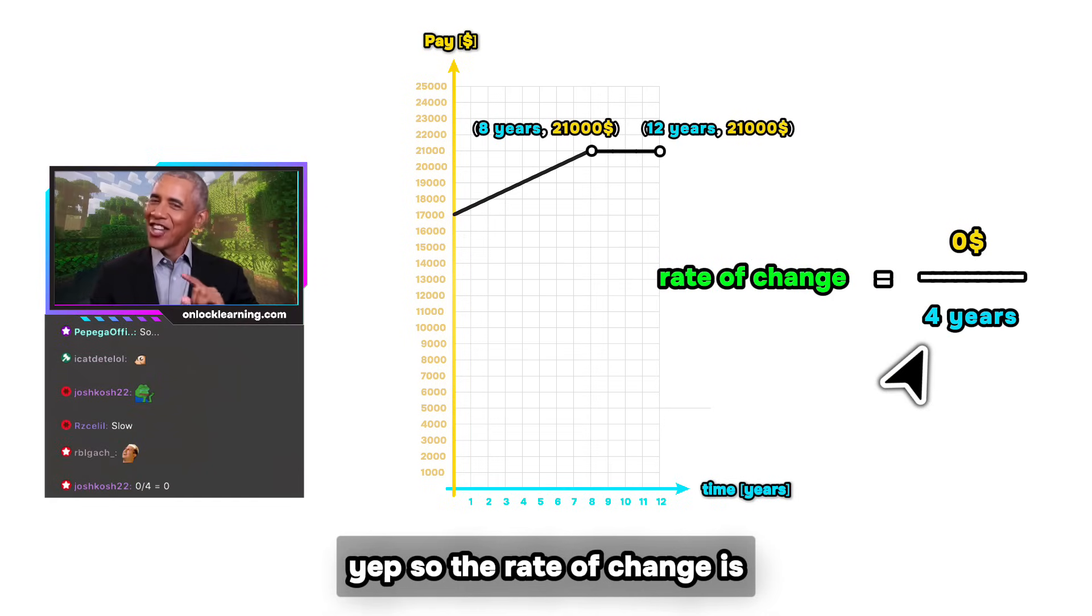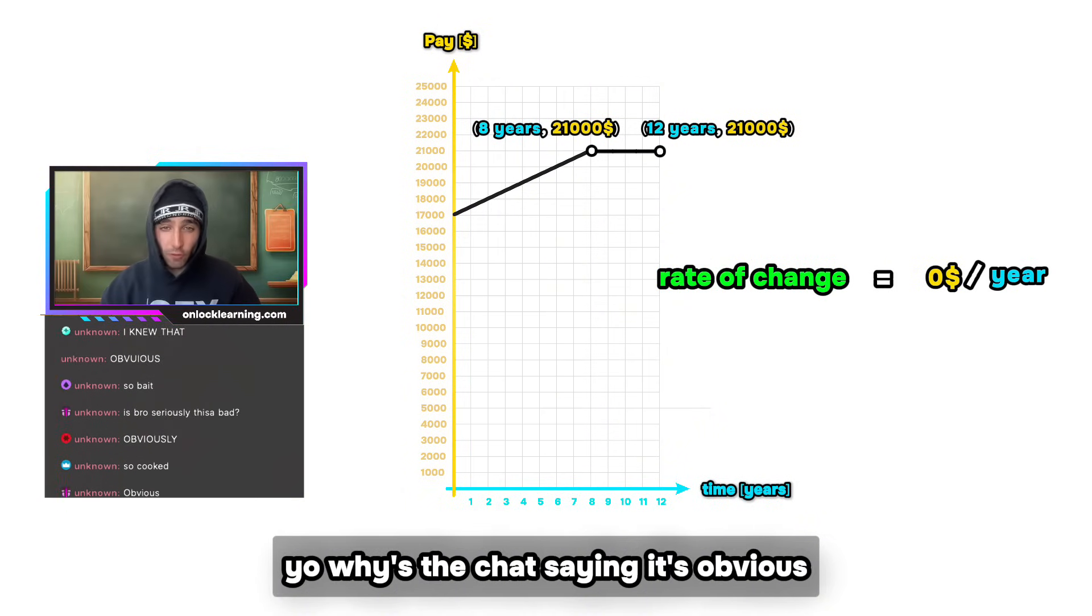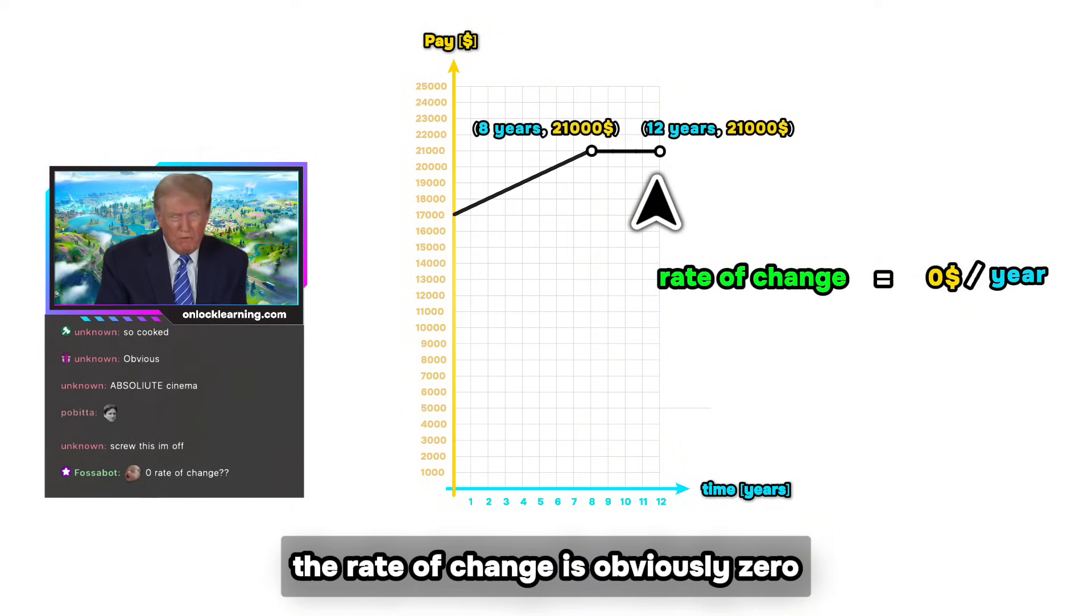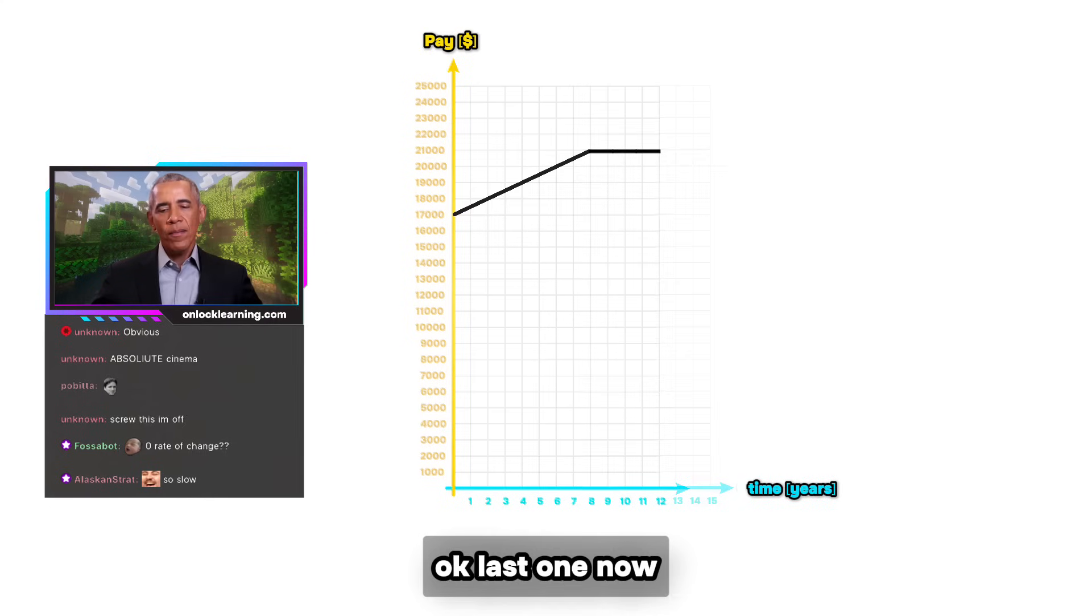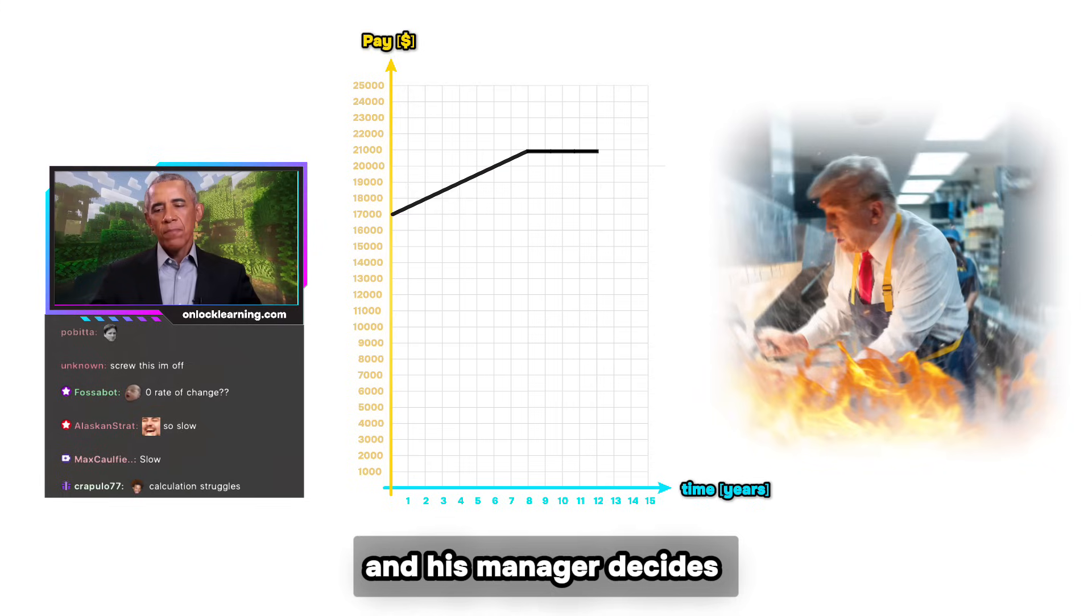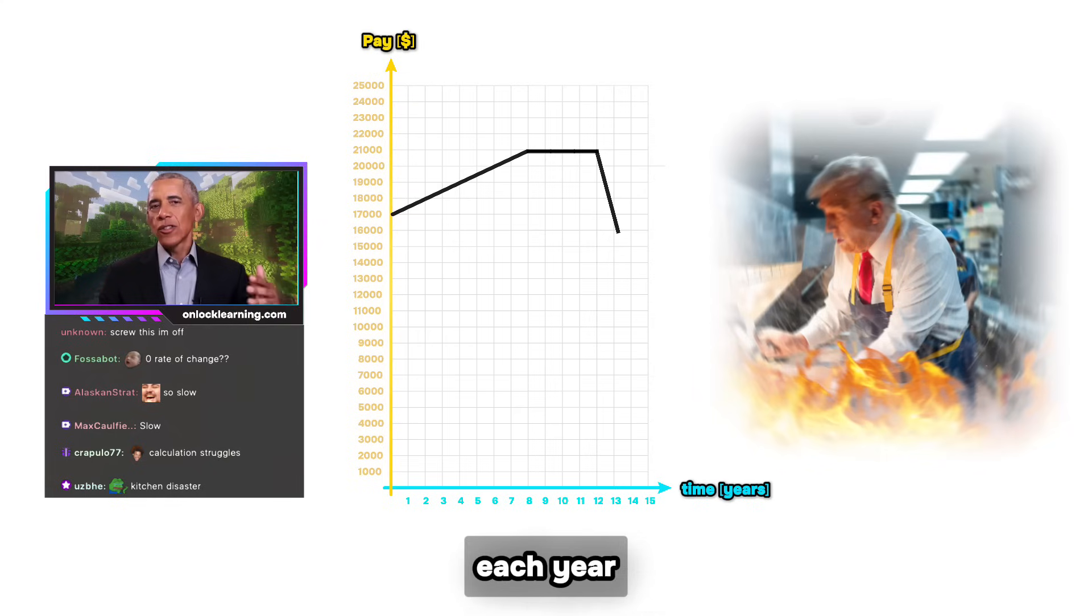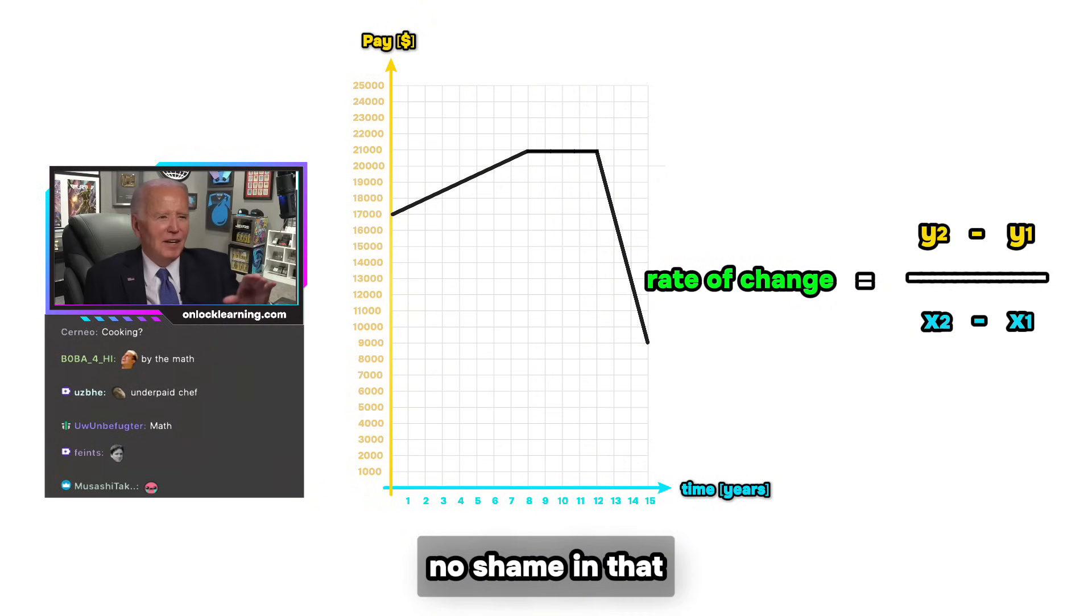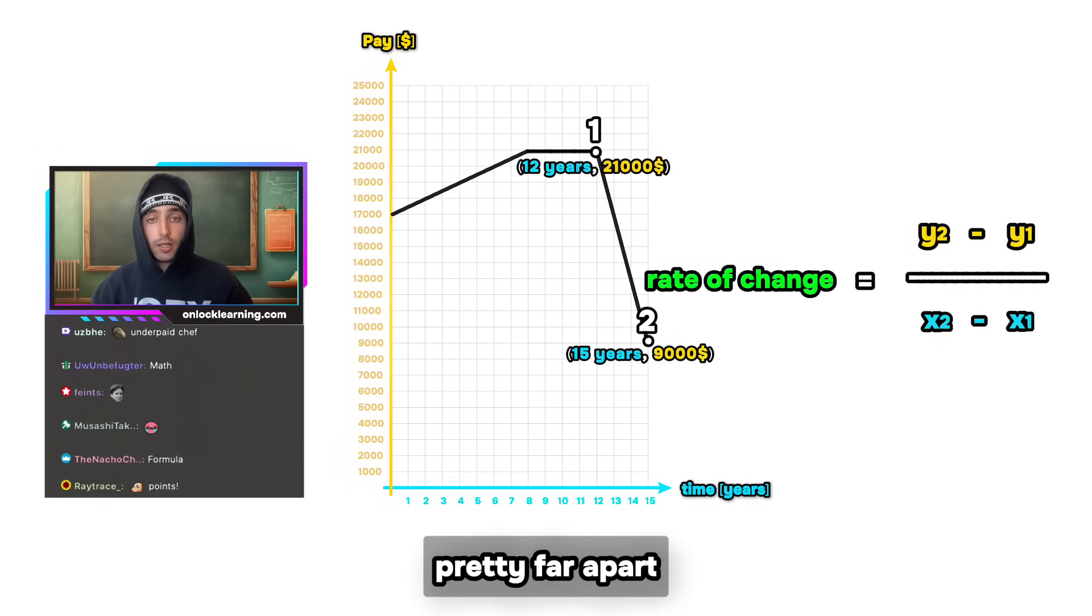Yep, so the rate of change is zero dollars per year. Yo, why is the chat saying it's obvious? Because it is. Since my pay didn't change at all over that time, the rate of change is obviously zero. Obviously. Okay, last one now. Say Donnie starts really messing things up in the kitchen and his manager decides to start paying him less each year. So looking at this, what's the rate of change now? I'm just gonna use the formula again. No shame in that. Okay, I'm gonna pick these two points that are like pretty far apart. Nice, nice, nice, nice.